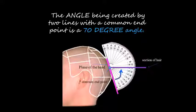That's where the hair is growing out of the head. The hair is being projected up, so this hair right here is being projected at 70 degrees from the plane of the head.